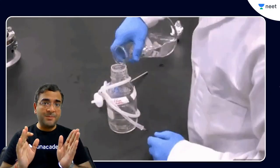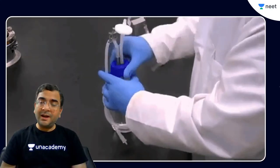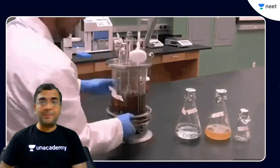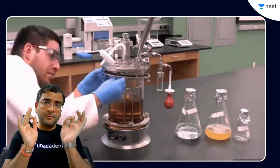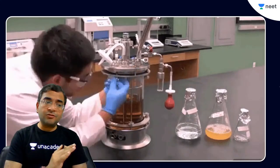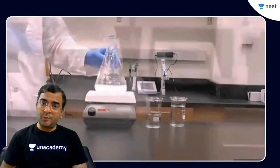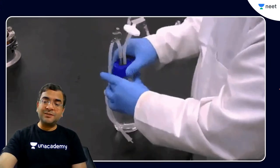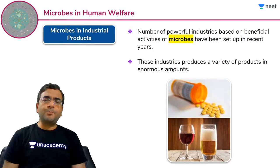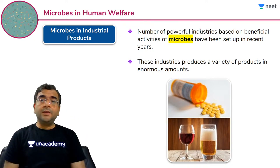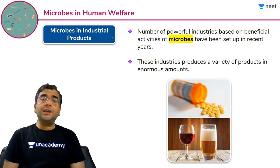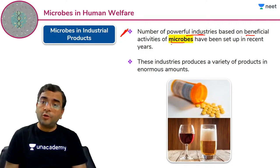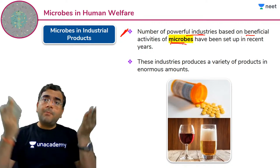Aaj ka jo challenge hai bachhon — is topic ke baad main aapke saath 10 questions start karaunga quiz mein, Unacademy quiz mein. Aaj main Microbes in Human Welfare chapter ke hi questions dunga. Agar truly speaking bola jaaye, toh is chapter mein ab jo hai, waste management technique hi humein seekhni hai. Kal ke session mein humne household microbes ke baare mein jaan liya. Aaj hum jaanenge industrial production of microbes. There are quite a number of powerful industries based on beneficial activities of microbes — poori ki poori factory unit, poori ki poori industry microbes ke upar hi based hai.